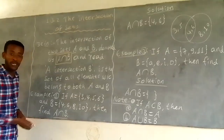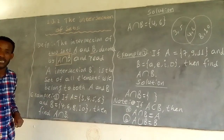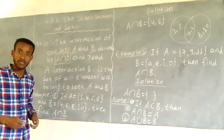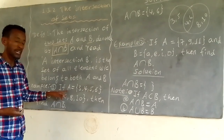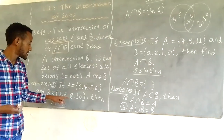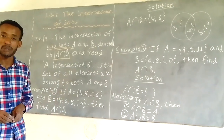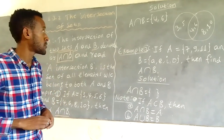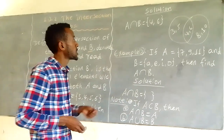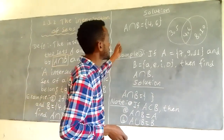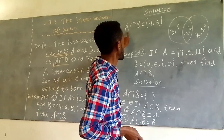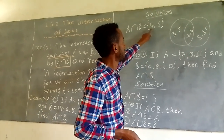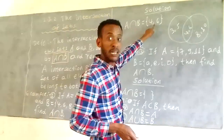We are going to find the intersection of A and B. Solution: A intersection B is equal to the set {4, 6}.